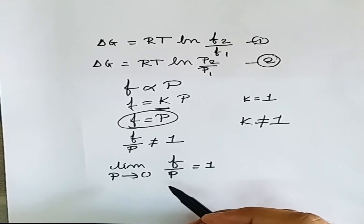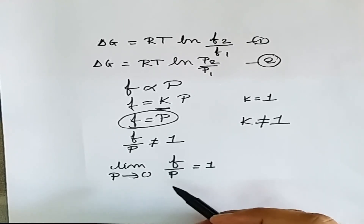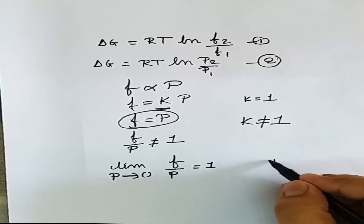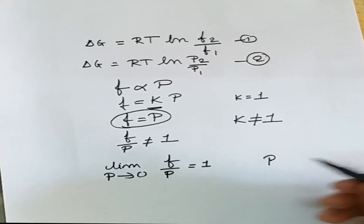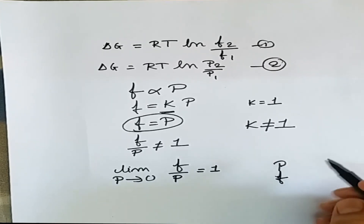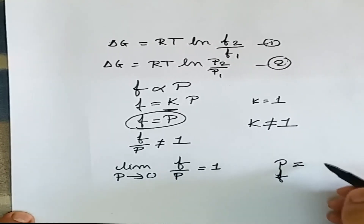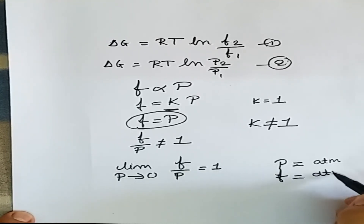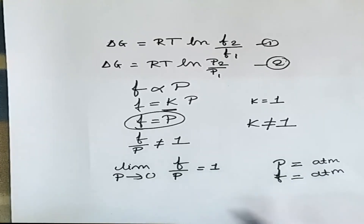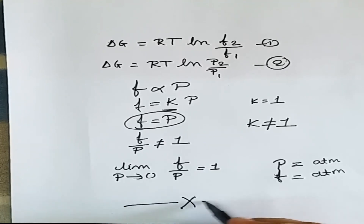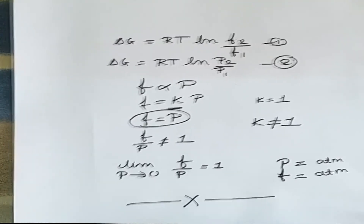Fugacity is nothing but a fictitious pressure used in the case of real systems. For an ideal system we use pressure P; for a real system we use fugacity f. Just as the unit of pressure is atmosphere, the unit of fugacity is also atmosphere. I hope you liked the lecture — thank you very much, and please write any comments in the comment box.